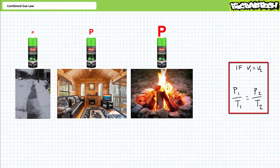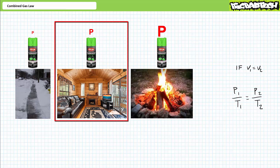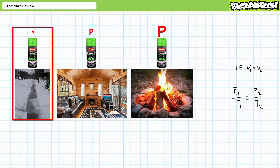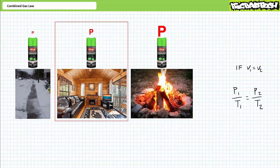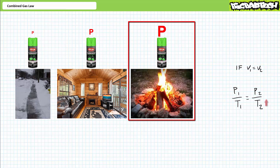This is often expressed mathematically as P1 over T1 equals P2 over T2, where P1 and T1 are the initial conditions and P2 and T2 represent some new state. Consider the can in the house as state one — there exists a certain P1 and a certain T1. We left an identical can outside and decreased the temperature: T2 goes down. Given P1 over T1 must equal P2 over T2, if T2 goes down, P2 must also go down. Again, consider the can in the house as state one. If we toss the identical can into a campfire and increase the temperature, T2 goes up. Given P1 over T1 must equal P2 over T2, if T2 goes up, P2 must also go up.